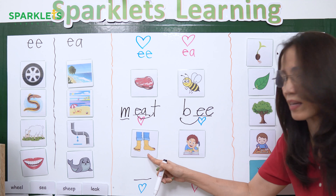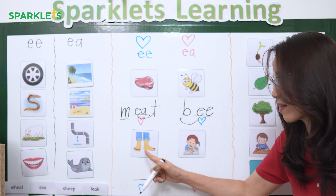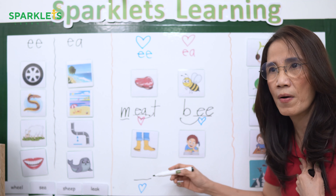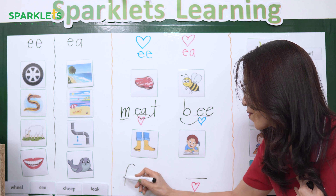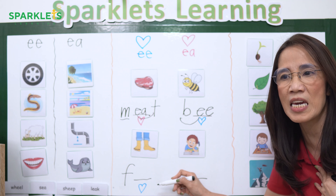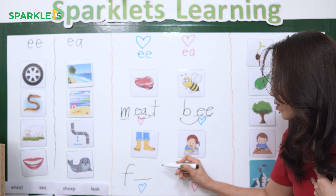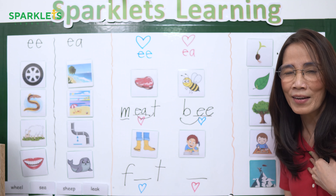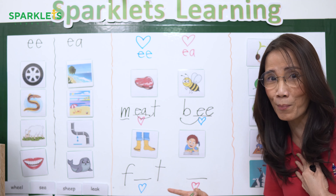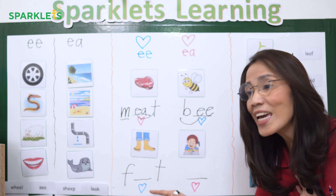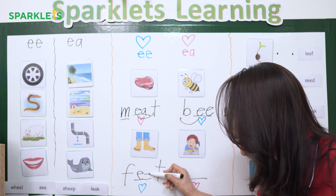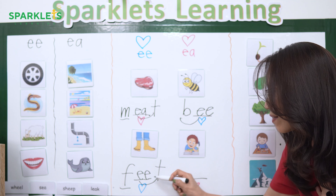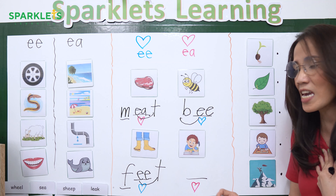How about this one? What is the word? Feet. What is the beginning sound? F. And what is the final sound? T. Now look — it's a blue heart. What is that? You should know by heart. It's EE. Yes, correct — it's EE. Now you read: F-EE-T — feet. That's the spelling of feet.